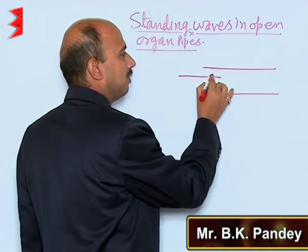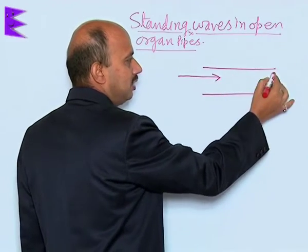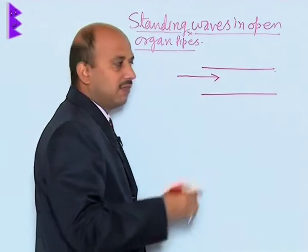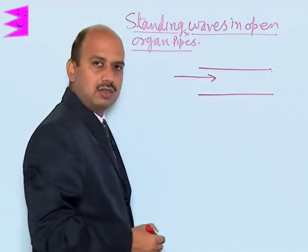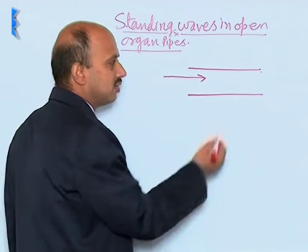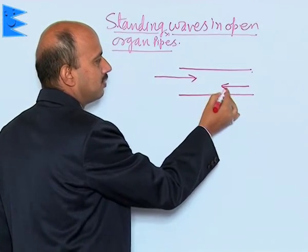Suppose a longitudinal wave is coming from this side. As it reaches this end, there is a difference in the density of air inside and outside, so reflection takes place and the reflected wave is taken like this.